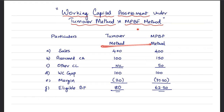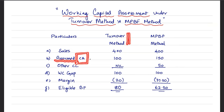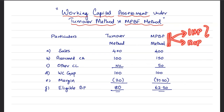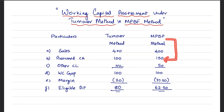In both scenarios, under the Turnover Method and the MPBF Method, the sales assumed is 400. The Turnover Method makes an assumption for current assets — it assumes current assets are going to be 25% of estimated sales. So 400 into 25% gives us 100 as the assumed current asset. That is not the case with the MPBF Method, because it looks into the inventory holding period and receivables collection period and accordingly arrives at current assets. For the same level of sales, the estimated current asset under MPBF is 150, which is higher than what was assumed under the Turnover Method.